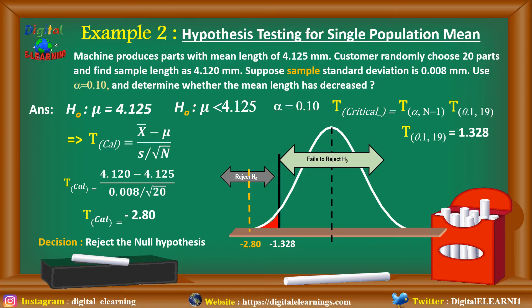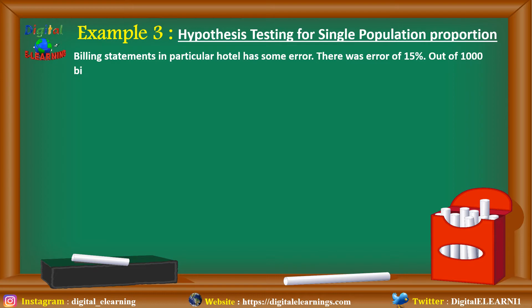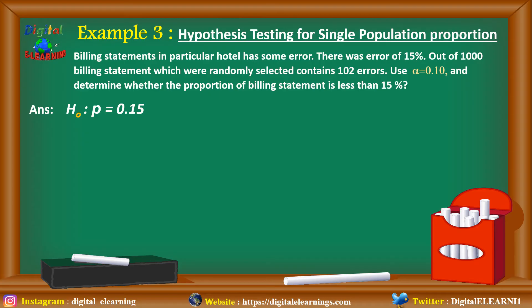Now let's take a different case for hypothesis testing for single population proportion. Billing statements in a particular hotel have an error rate of 15%. Out of 1000 billing statements randomly selected, 102 contained errors. We use alpha of 0.1 and determine whether the proportion of billing statement errors is less than 15%. So the null hypothesis is p equal to 0.15, and the alternate is p less than 0.15.